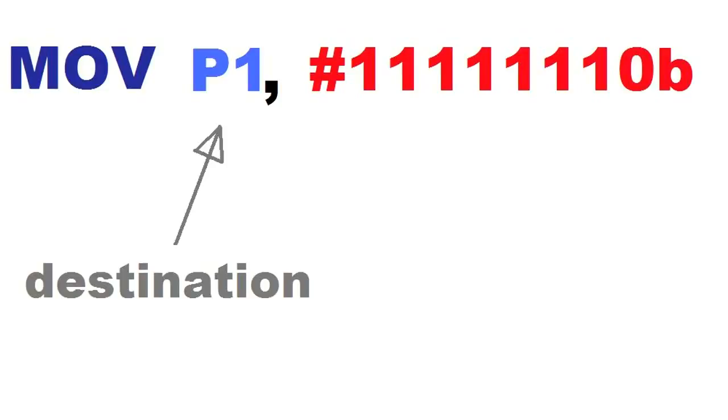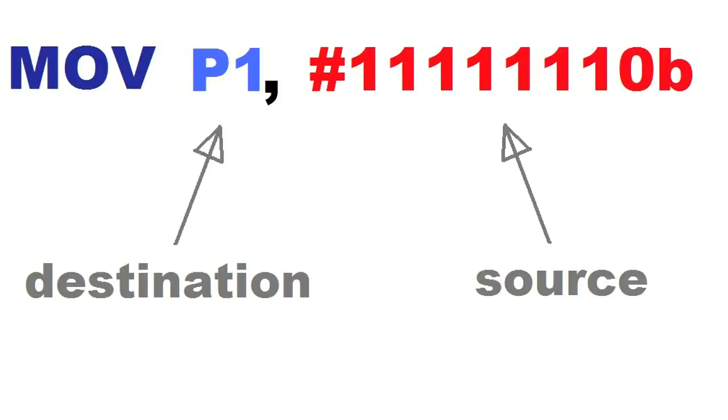In this code, MOV P1, #11111110 — the destination is the 8-bit port register P1, and the source is the binary number 11111110.